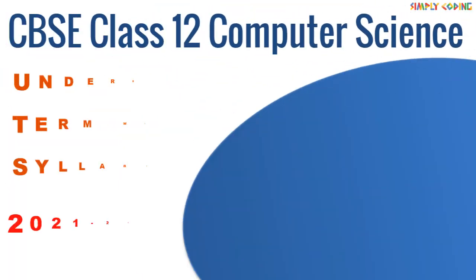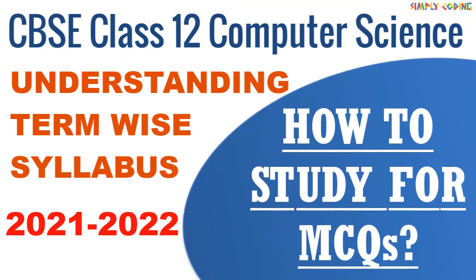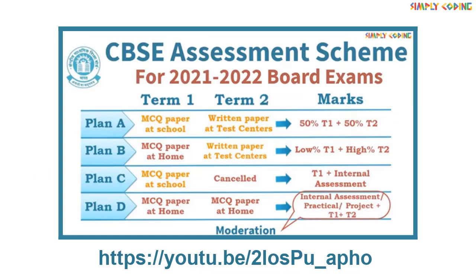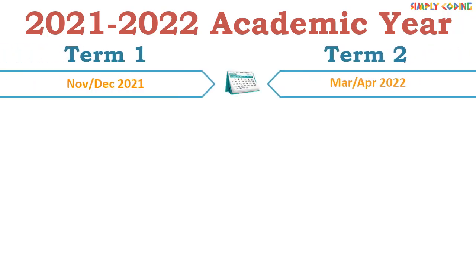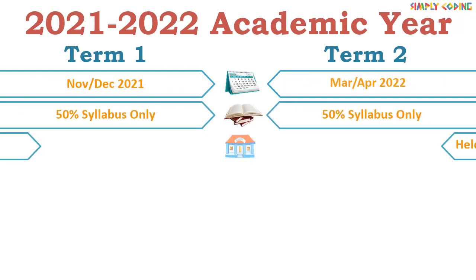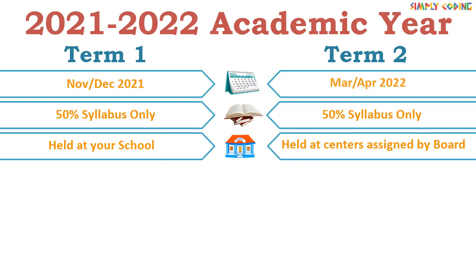In this video we will explain term-wise computer science syllabus for CBSE class 12 for the 2022 exam. In our last video we explained the assessment scheme that CBSE is going to use this year. To summarize: instead of one board exam, there are going to be two exams — one in November/December and another in March/April next year, with 50% syllabus each.